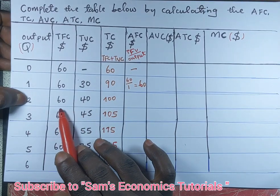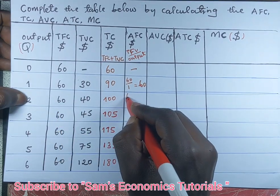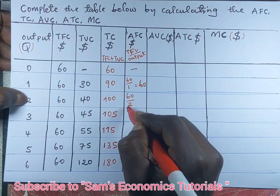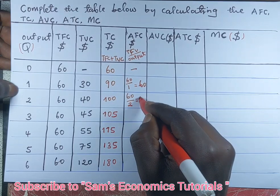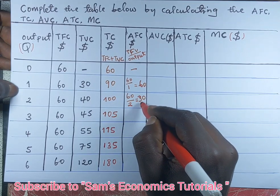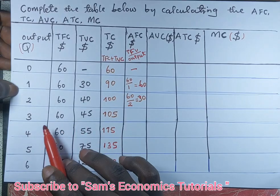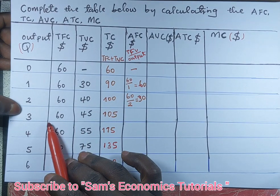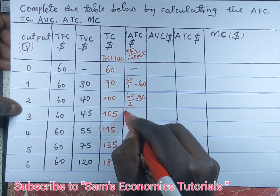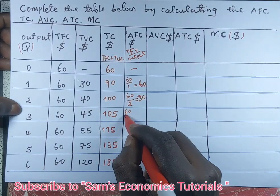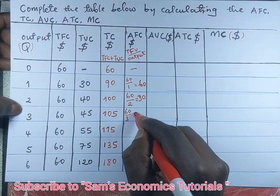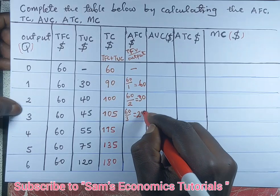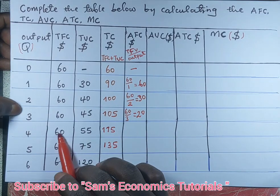When two units of output are produced, we have 60 divided by 2, which gives our average fixed cost as 30 US dollars per unit. When three units of output are produced, we divide 60 by 3, which gives us 20 US dollars per unit output.